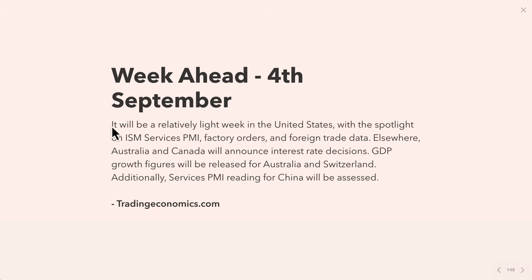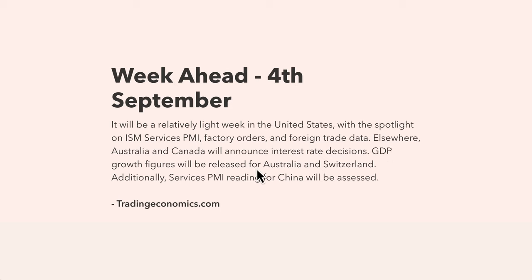So the 4th of September — from tradingeconomics.com — it will be a relatively light week in the United States with a spotlight on ISM services PMI, factory orders, and foreign trade data. Elsewhere, Australia and Canada will announce interest rate decisions, both expected to hold rates. GDP growth figures will be released for Australia and Switzerland, and services PMI readings for China will be assessed for risk-off sentiment.